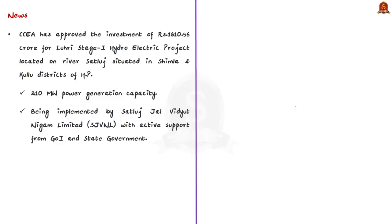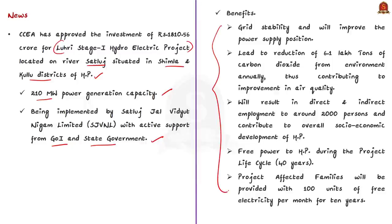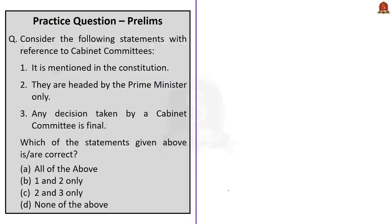Looking at today's news article, the Cabinet Committee on Economic Affairs has approved investment in the Luhri Stage 1 Hydroelectric Project, located on River Sutlej in the Shimla and Kullu districts of Himachal Pradesh. This project will have a 210 MW power generation capacity and is being implemented by the Sutlej Jal Vidyut Nigam Limited with active support from the Government of India and the state government of Himachal Pradesh. From this news article, try to know on which river this hydroelectric project is located.